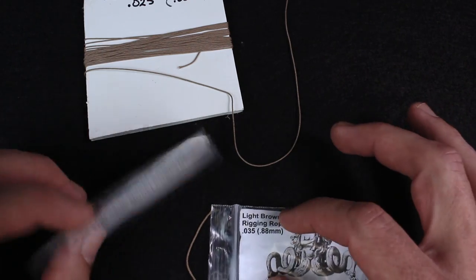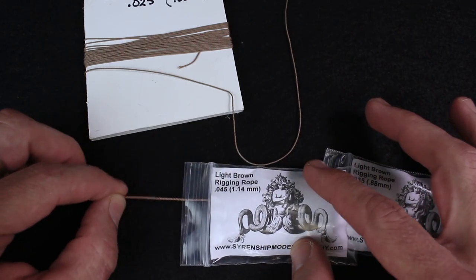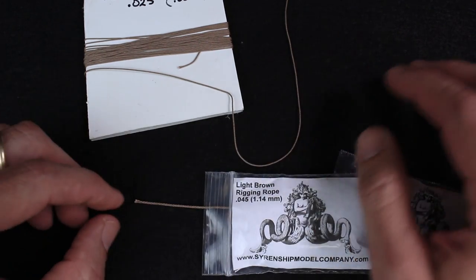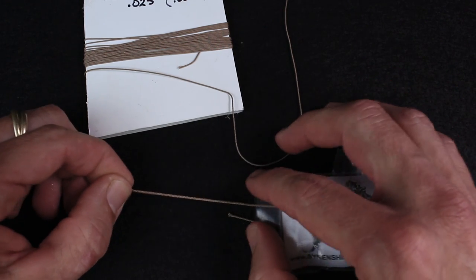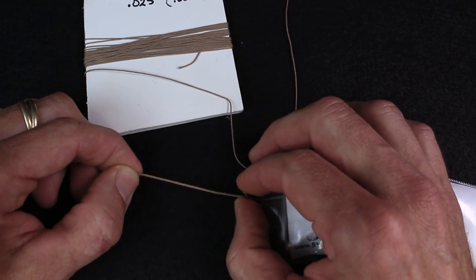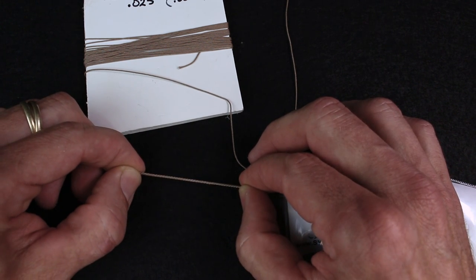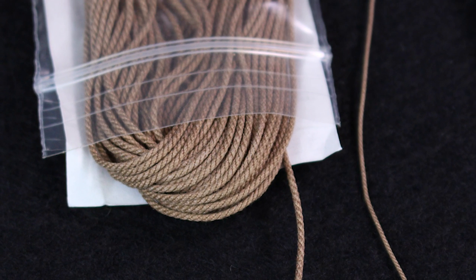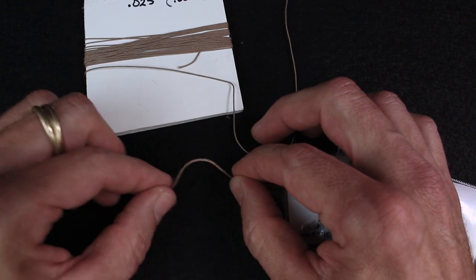To be fair, there isn't a ton that can be said about it - it's rope - but there are definitely some things to be said for it within the umbrella of what makes a good model rope. First off, the detail is really nice on the rope. It has a very nice twist to it, it looks very realistic for the scale. Secondly, it's got a very nice pliability to it. It's a soft material, so it's easy to work with.